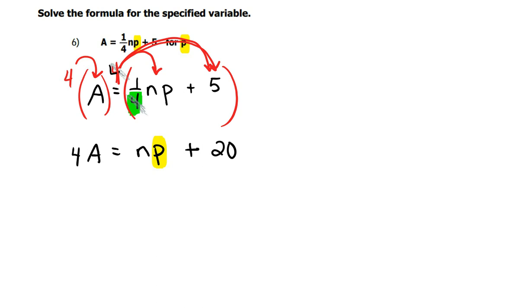And the opposite of multiplying is dividing. And so we want to do that last. So the next thing I'm going to do is knock out this 20, and I'm going to subtract 20 on both sides.